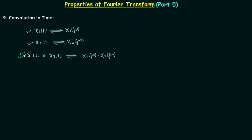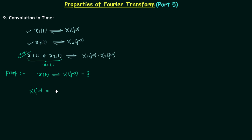Now we will try to prove this property. Let x1(t) convolved with x2(t) equal signal x(t). So we have a time domain signal x(t) with Fourier transform X(jω), and we are interested in calculating X(jω). We already know the formula: X(jω) equals the integration from minus infinity to infinity of the time domain signal multiplied by e^(-jωt) dt. And x(t) equals x1(t) convolved with x2(t).